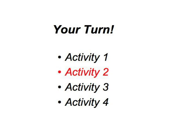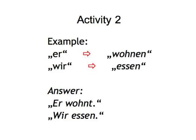Activity 2. This activity is pretty much the same as the one before, but we'll mix up the forms a little bit more, using the plural and throwing in some regular verbs too. So when you see wohnen, er or essen, wir, the correct forms are simply...